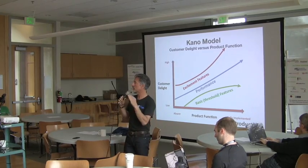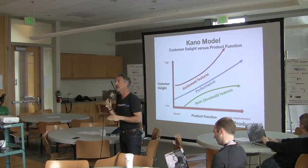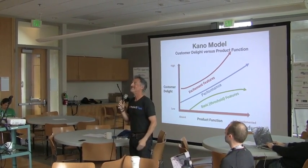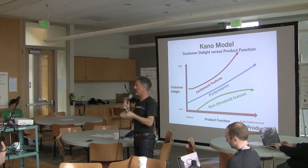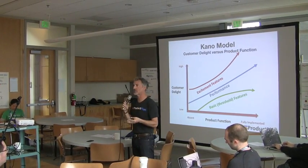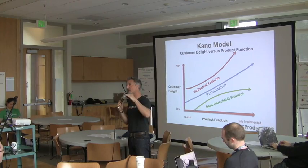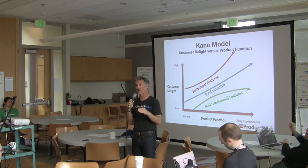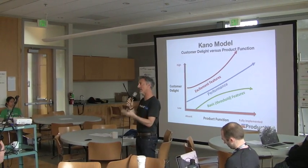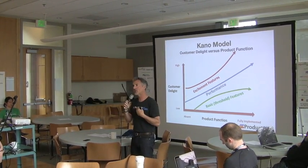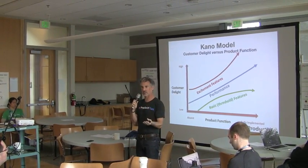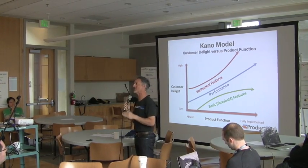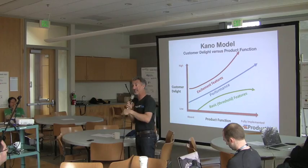Here's the thing with this model: take the payables function of an accounting package — you can pour a whole lot of time and money into that feature over years, and you're going to start to get diminishing returns of customer delight. So these basic features that need to be there — use caution in continuing to invest in them, because you're going to get diminishing returns. The goal is to delight customers, and adding more to the payables function may not get you more delight.